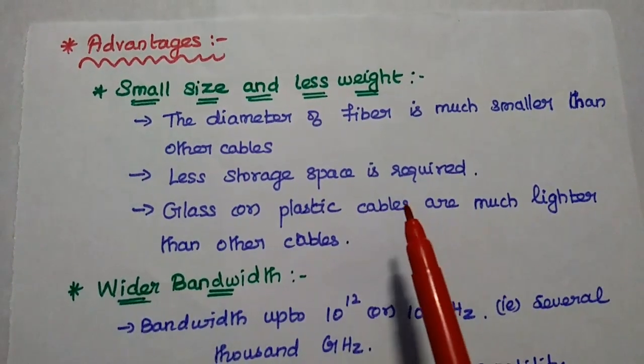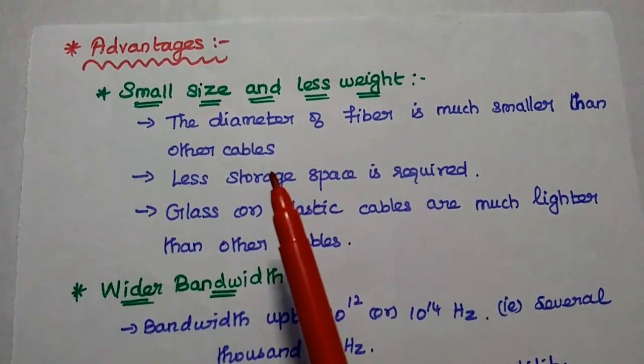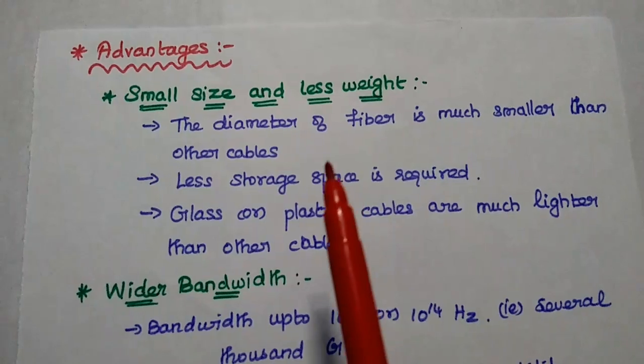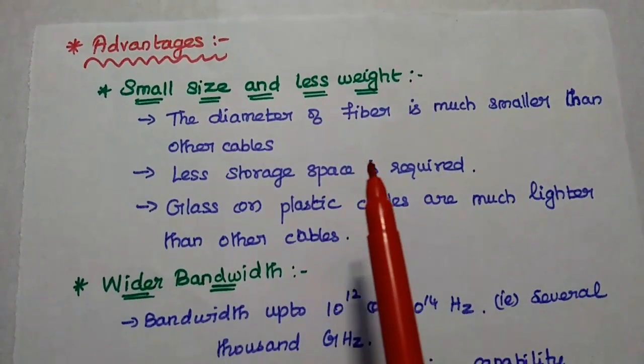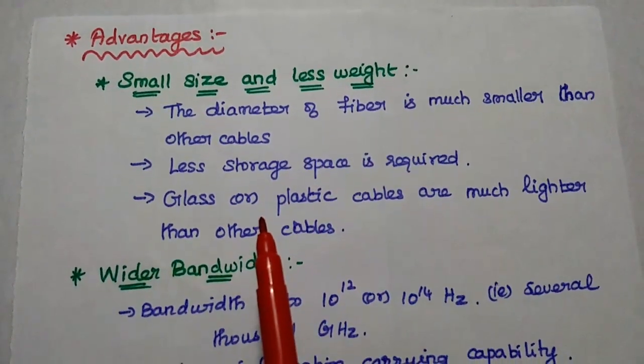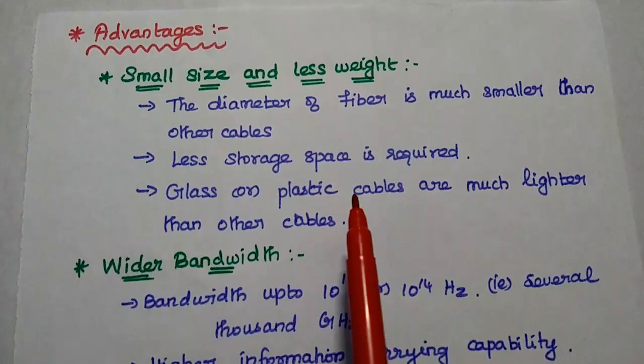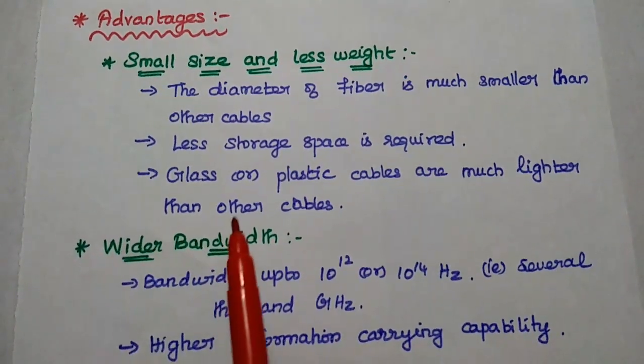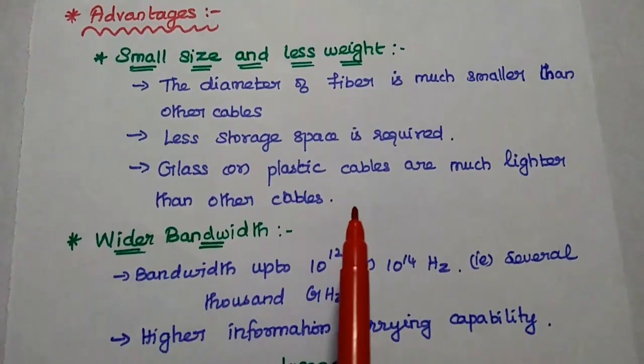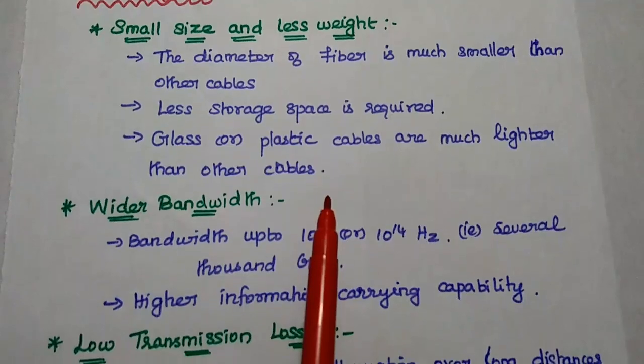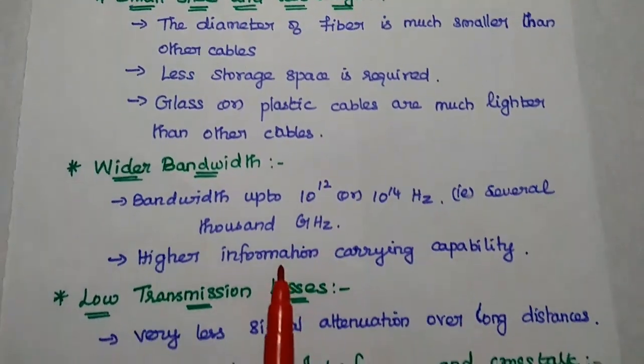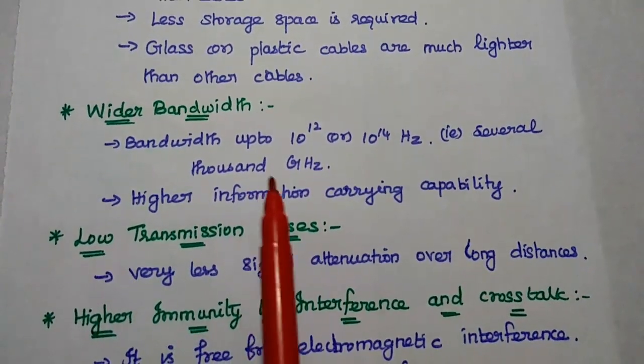Next, advantages of optical fiber. It is small in size and less weight. Its diameter is much smaller than other cables, hence it requires less storage space. Since it is made up of glass or plastic material, it is much lighter than other cables.